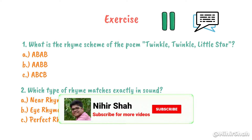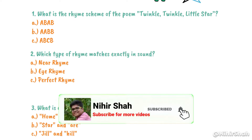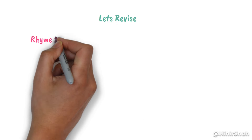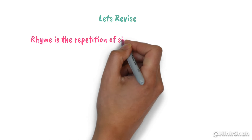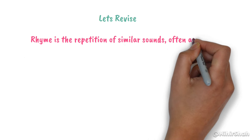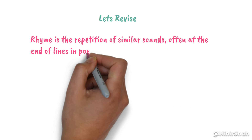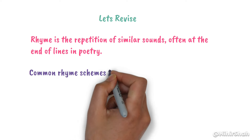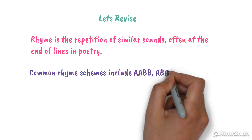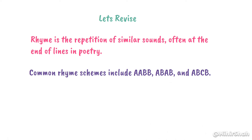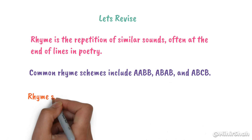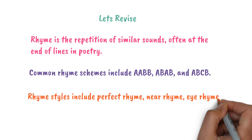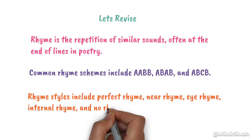I hope you would have given the correct answers. Let's quickly revise what we learned in this lesson. Rhyme is the repetition of similar sounds, often at the end of lines in poetry. Common rhyme schemes include AABB, ABAB, and ABCB. Rhyme styles include Perfect Rhyme, Near Rhyme, Eye Rhyme, Internal Rhyme, and No Rhyme at all.